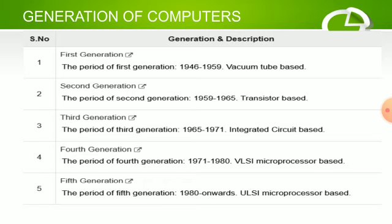Fourth generation: the period of fourth generation is 1971 to 1980, VLSI microprocessor based. Fifth generation: the period of fifth generation is 1980 onwards, ULSI microprocessor based.